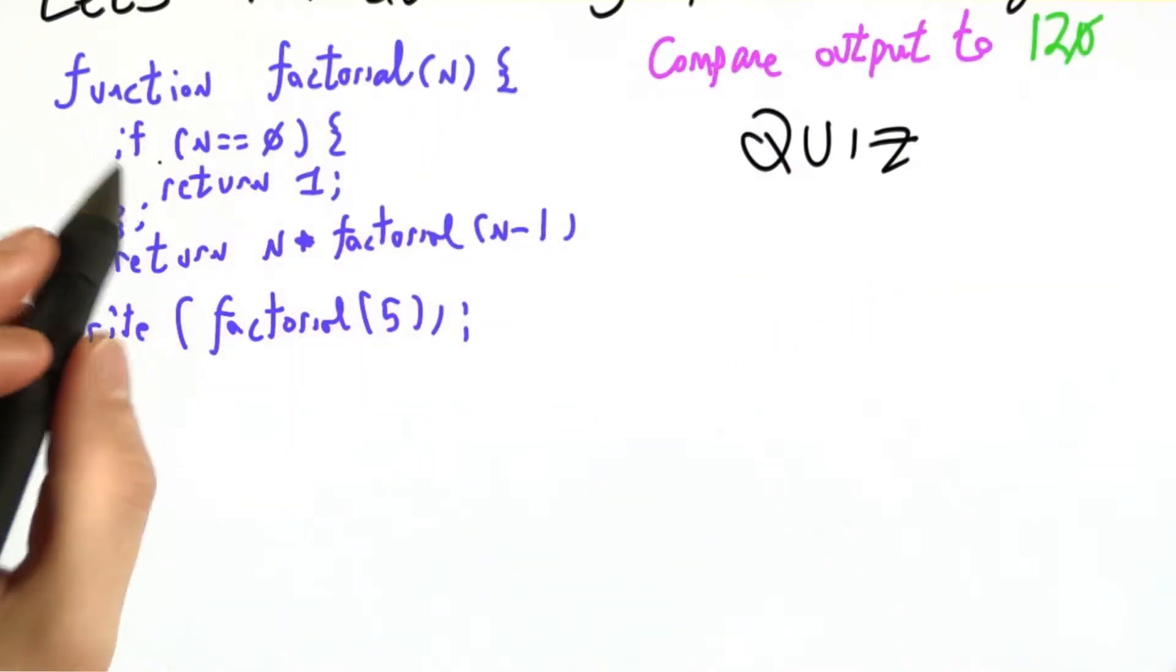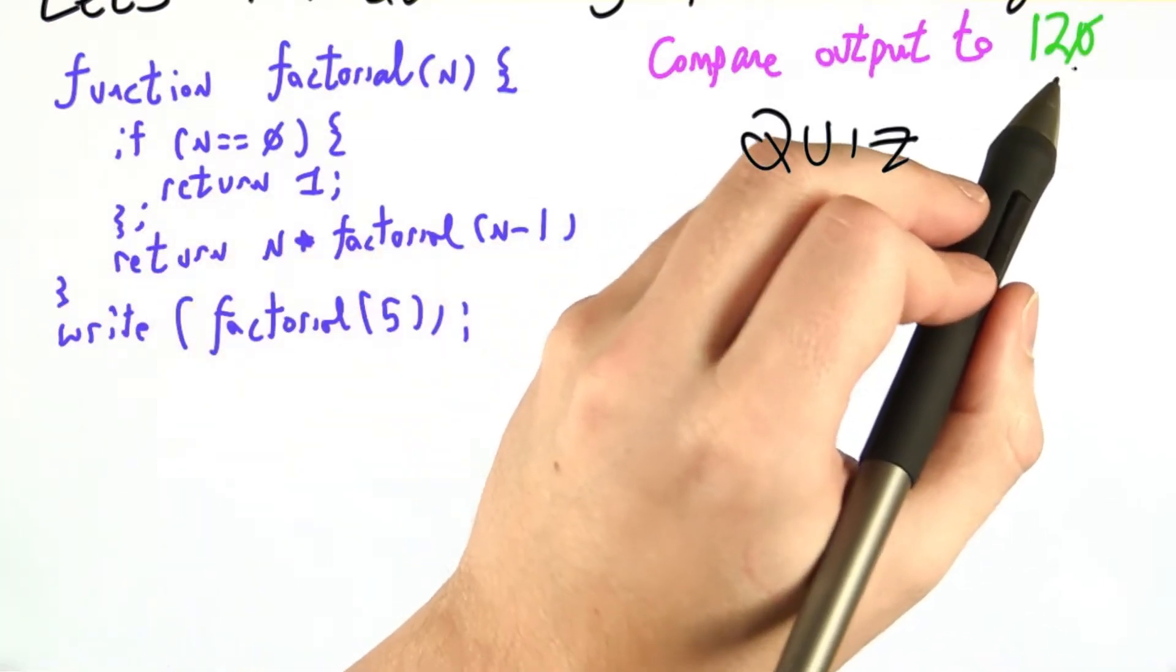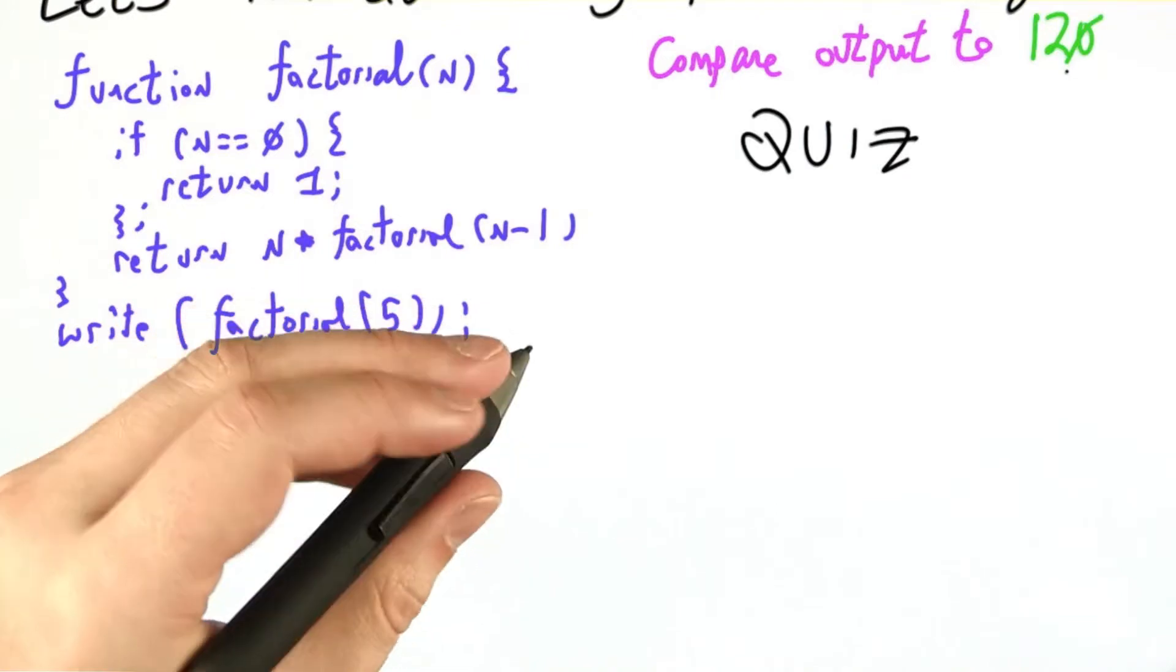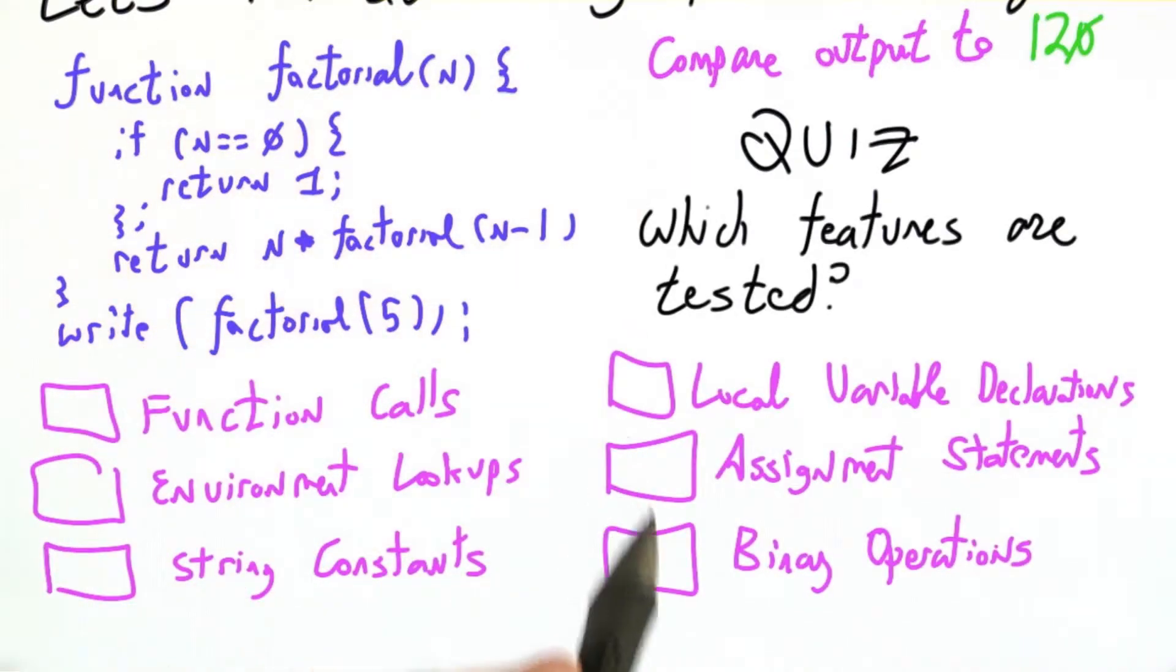Here's the quiz. Let's say this is our test case and that's the input we're comparing against. I want to know which parts of the program we gain confidence about. So here I've written 6 important parts of our JavaScript interpreter.